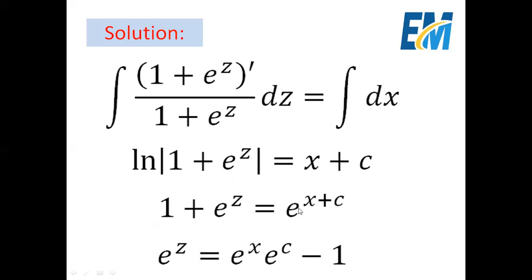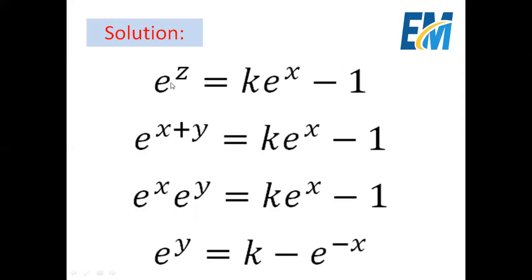Here, e to the power x plus c can be written as e to the power x multiplied by e to the power c. So, e to the power z will be e to the power x multiplied by e to the power c, all minus 1. Note that e to the power c is a constant, so it can be written as k. Then e to the power z equals k e to the power x minus 1. Since z equals x plus y, we have e to the power x plus y equals k e to the power x minus 1.